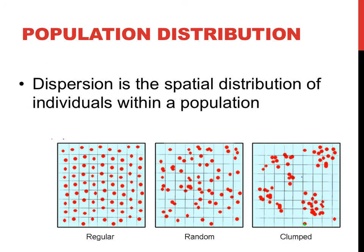Dispersion can be defined as the spatial distribution of individuals within a population. The dispersion of populations can be described as regular, random, or clumped. An example of a regularly distributed population might be apple trees in an orchard. If you were to look for wildflowers in a field, you might find them randomly dispersed. Schools of fish or herds of buffalo might provide an excellent example of clumped populations in nature. A separate video on quadrat sampling describes how you can mathematically determine if a population is regular, random, or clumped.